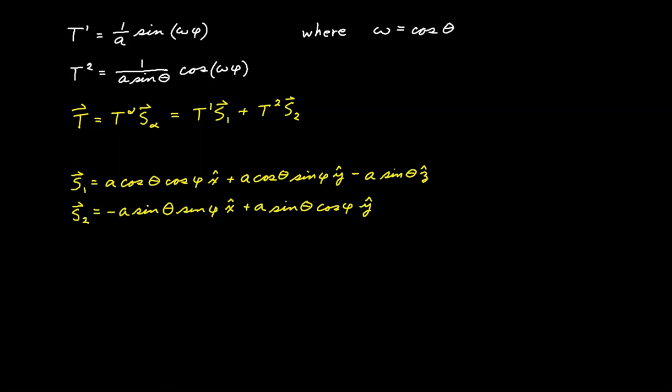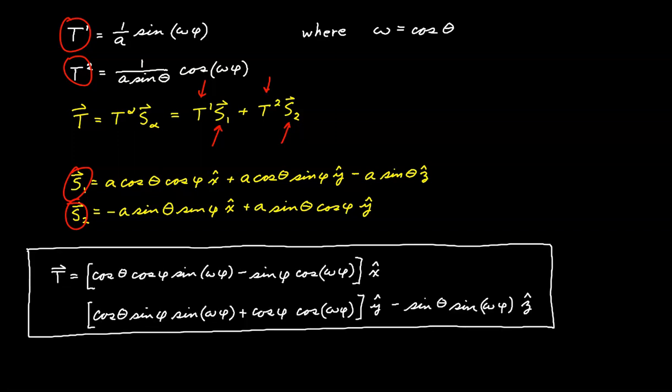This is what we derived for our basis vectors back in video number 61. So all we have to do now is to make the direct substitutions. We'll substitute T1 and T2 here and here, we'll substitute S1 and S2 here and here, and collect the terms and organize the final result. I'm not going to go through all of that because it's just algebra. I'll let you do that. But here's the final result. When we form the linear combination, we find that our vector T is equal to this full expression right here.